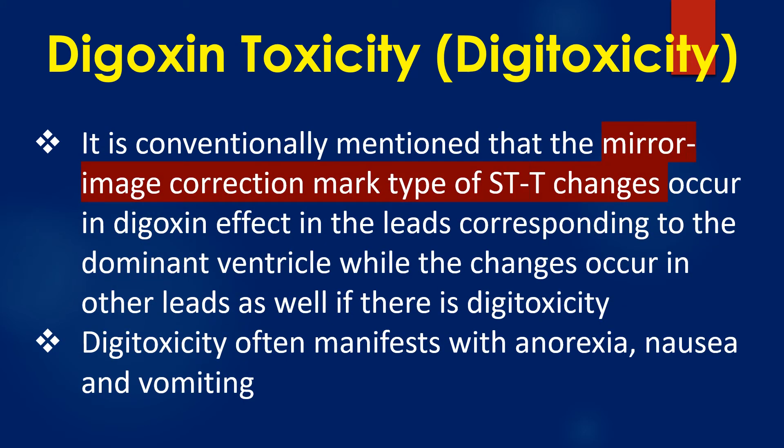It is conventionally mentioned that the mirror-image correction mark type of ST-T changes occur in digoxin effect in the leads corresponding to the dominant ventricle, while the changes occur in other leads as well if there is digoxin toxicity.